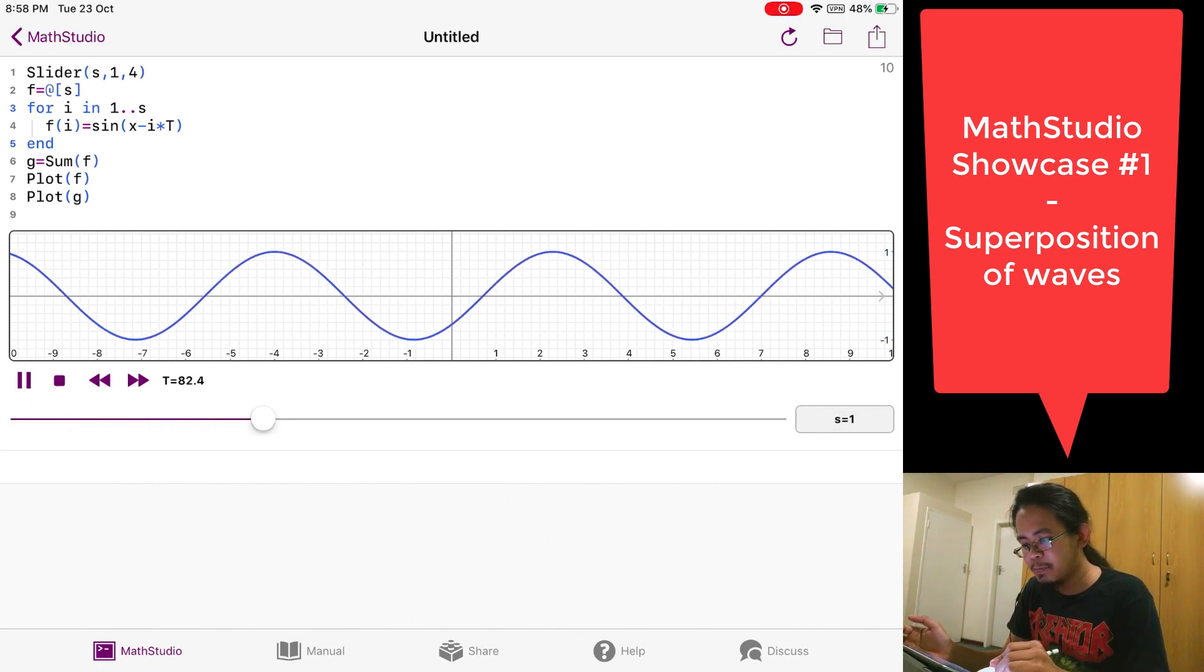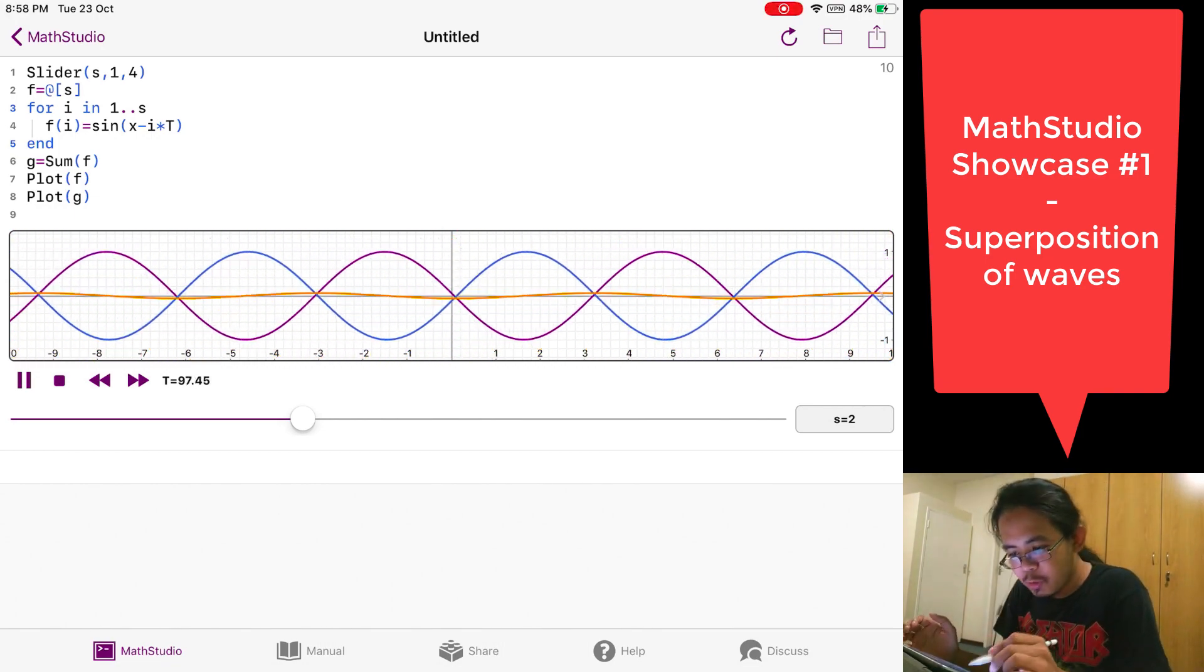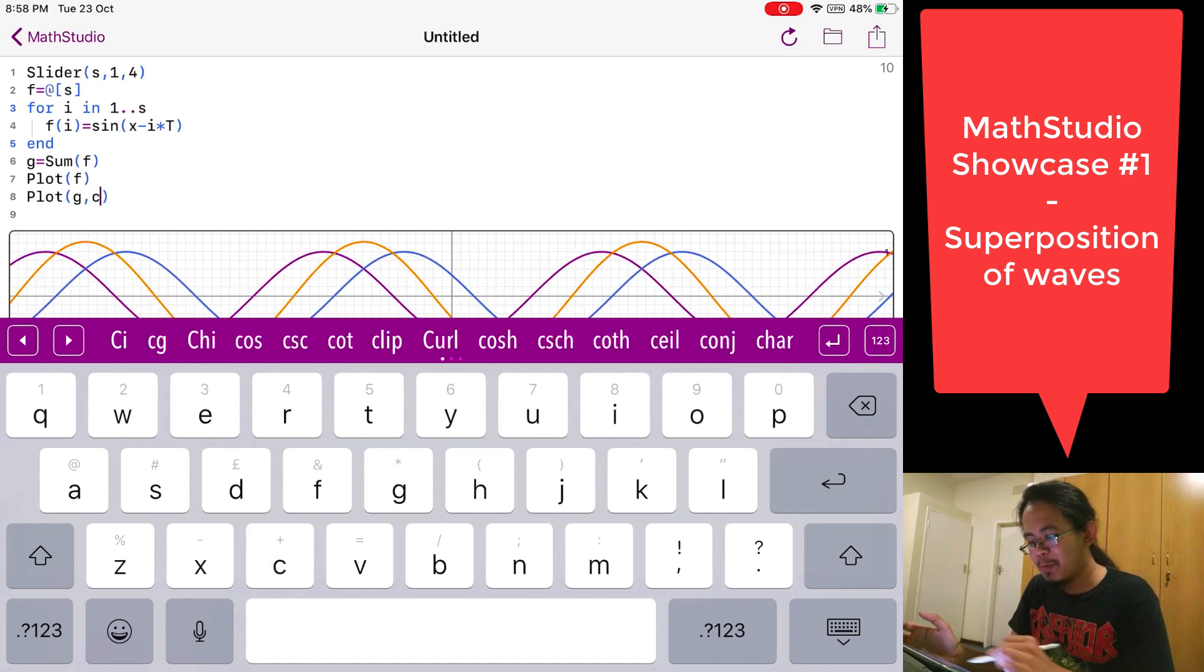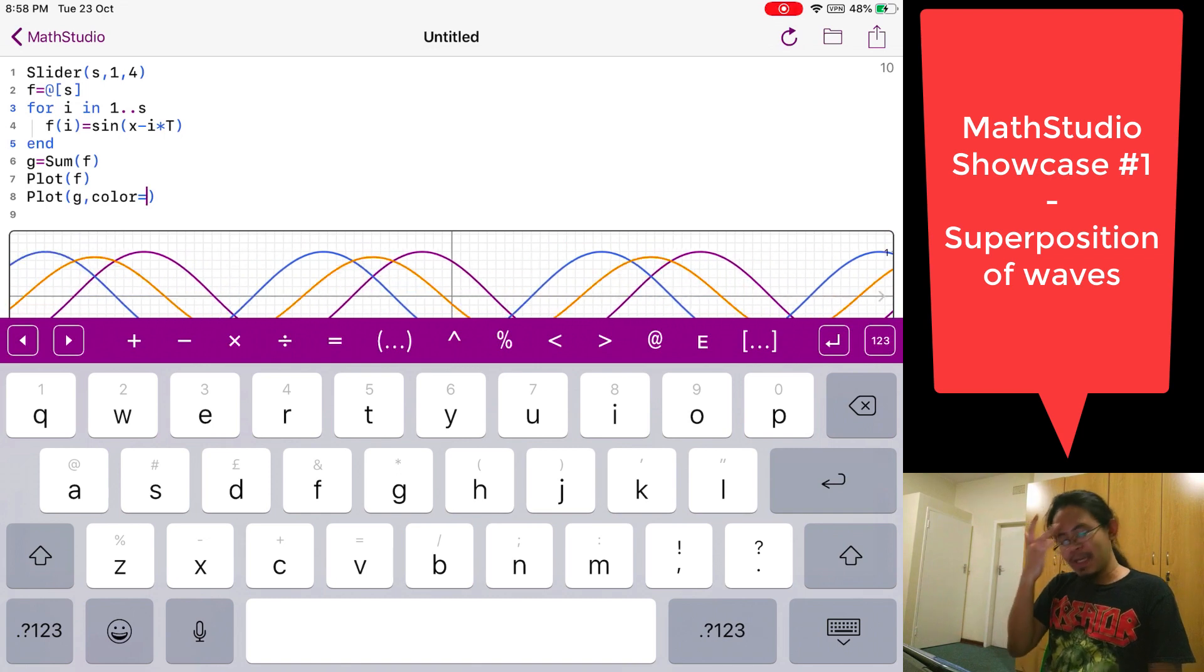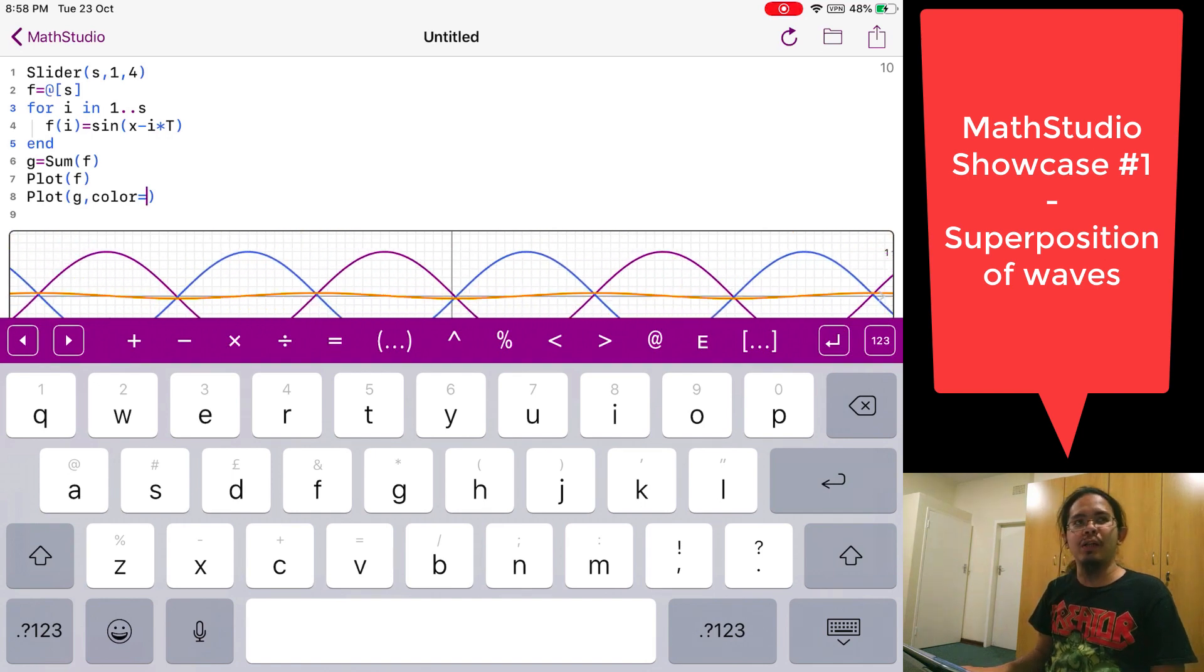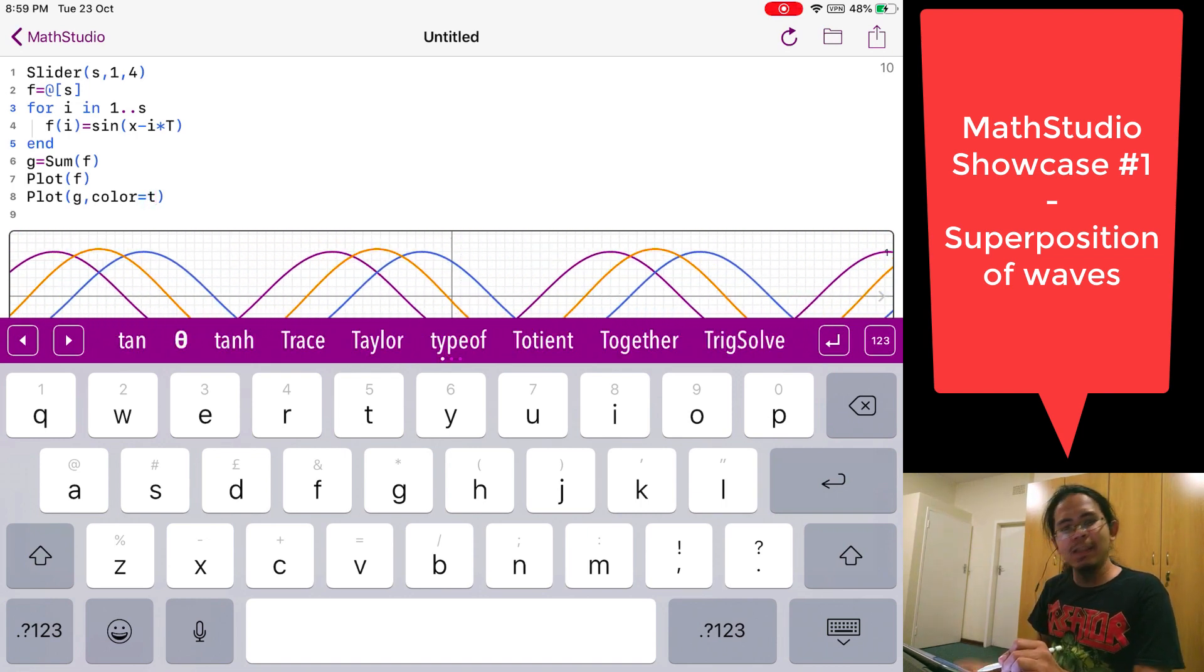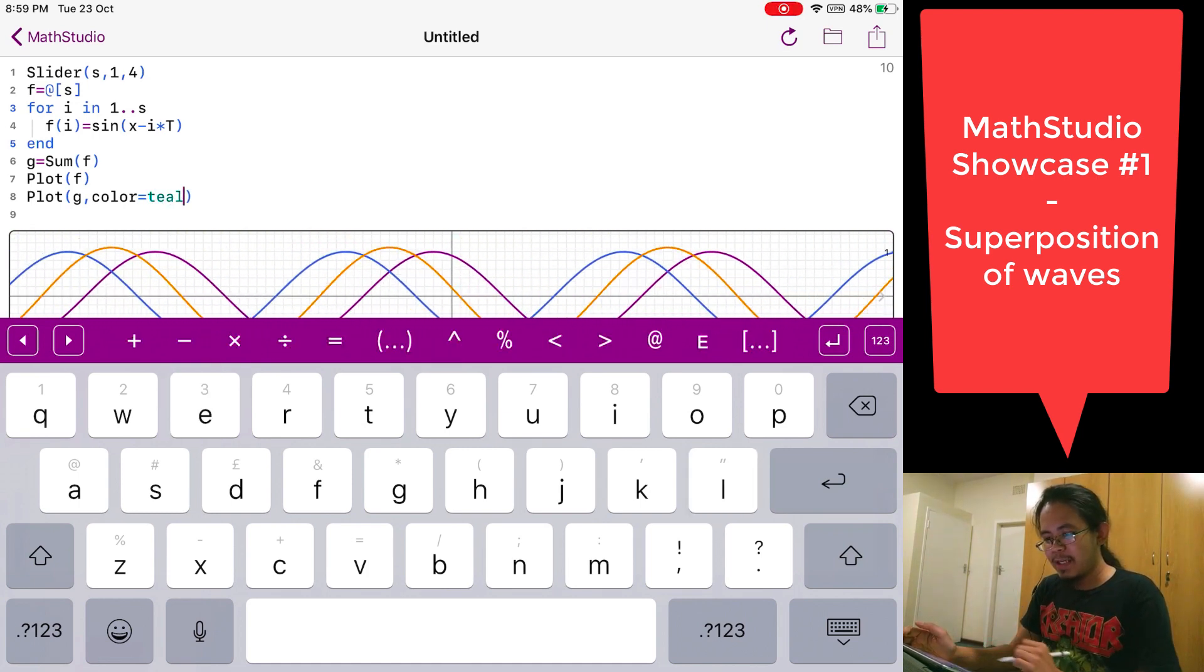So that we can tell right away which is the sum, let's give it a color. This is one of the nice features of MathStudio. You can give it a color. What color do you want? G is the sum, the total. What color starts with a letter T? Teal. I hope this has a color teal. Teal is sort of like blue greenish or something. It's here. It recognizes it. So when you use teal and then you press enter, that's S equals one. So let's make it S equals two. There's your sum.